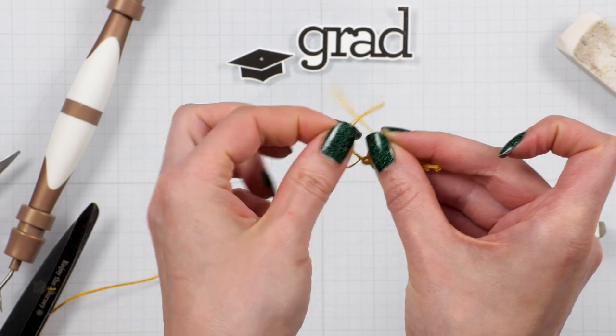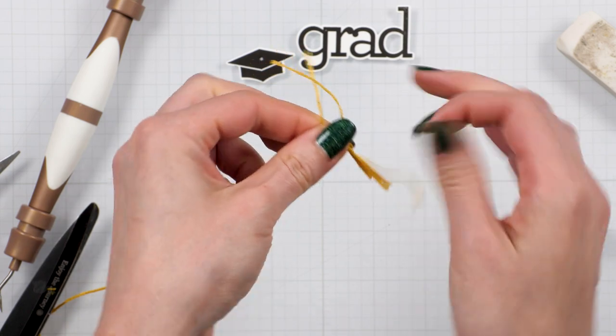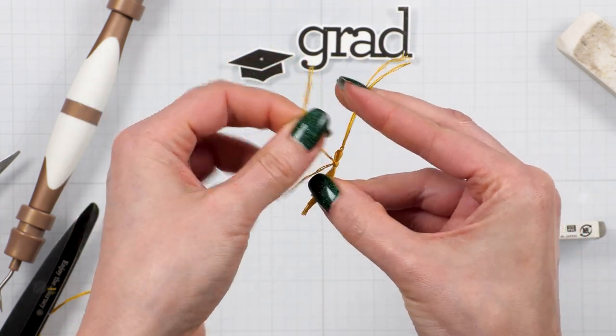If you struggle you can first make your tassel longer and then simply trim it later. That will make it a little bit easier to assemble it.